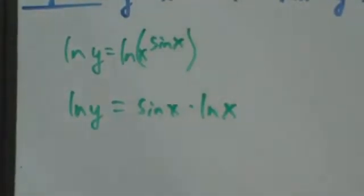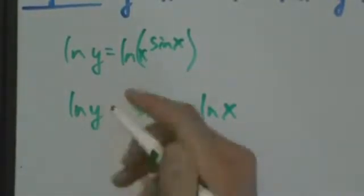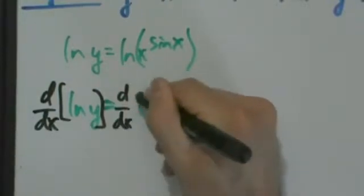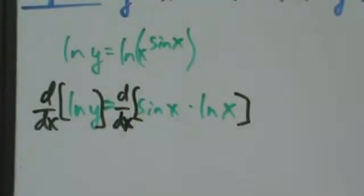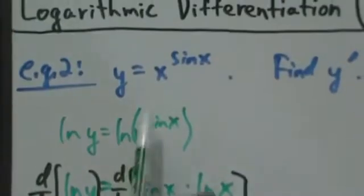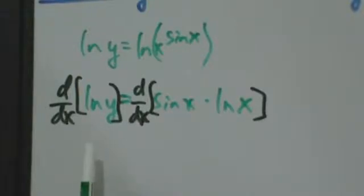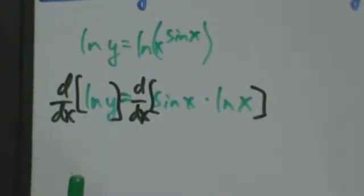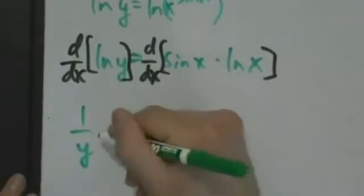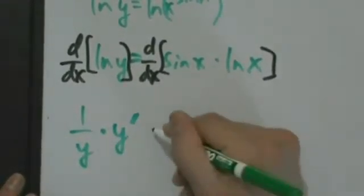Now we take the derivative of both sides — d/dx of the left equals d/dx of the right. For the natural log of y, we're taking the derivative with respect to x, so we treat it implicitly, or better yet, we just use the chain rule. The chain rule says the derivative of natural log of a thing is 1 over that thing times the derivative of that thing.